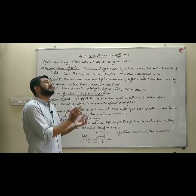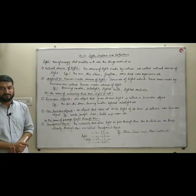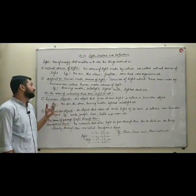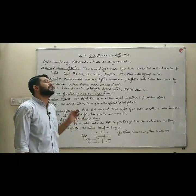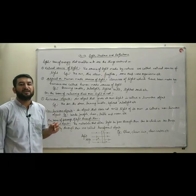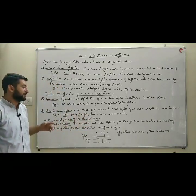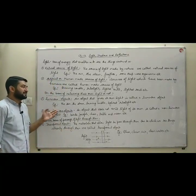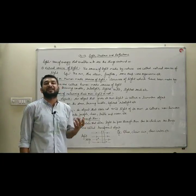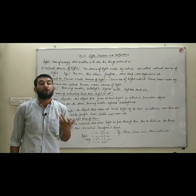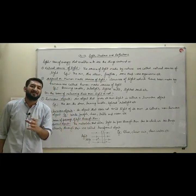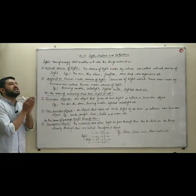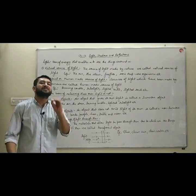On the basis of releasing their own light or not, there are two kinds of objects. The first ones are luminous objects. An object that gives its own light, that releases its own light, is known as a luminous object. The sun, the stars, the burning candle, the lighted tube light, the lighted electric lamp, the lighted torch — all those sources releasing their own light are known as luminous objects.